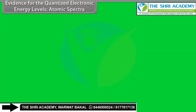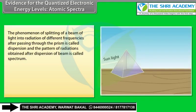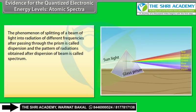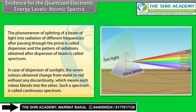Evidence for quantized energy levels — Atomic spectra: The splitting of light into radiations of different frequencies after passing through a prism is called dispersion; the pattern obtained is called a spectrum. In dispersion of sunlight, seven colors change from violet to red without any discontinuity, each blending into the next — this is called a continuous spectrum.